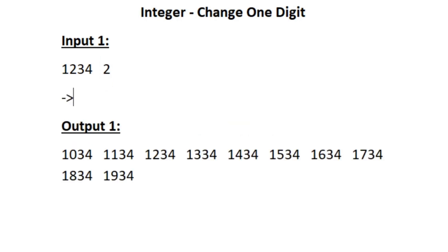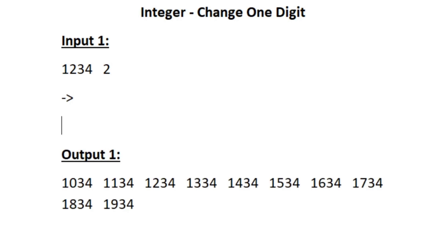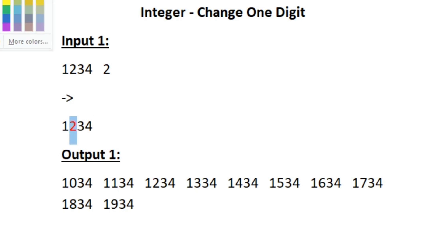Here k is equal to 2, so we have to replace the second digit in the integer n. The integer n is 1234 and the second digit is 2. We have to replace this second digit and form 10 new integers and print the integers in a sorted way. The second digit will be replaced with the digits from 0 to 9, so first the 2 will be replaced with 0.